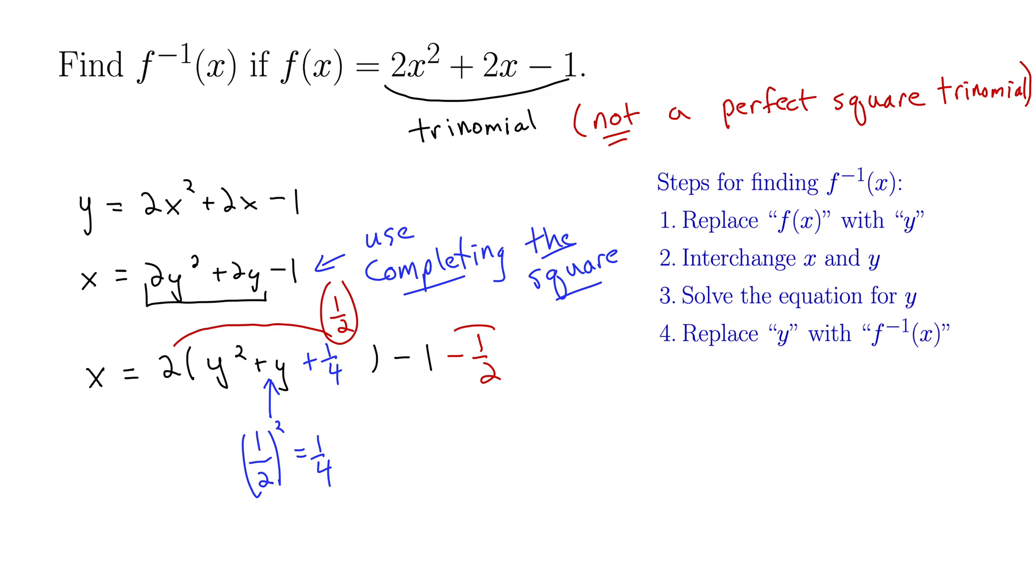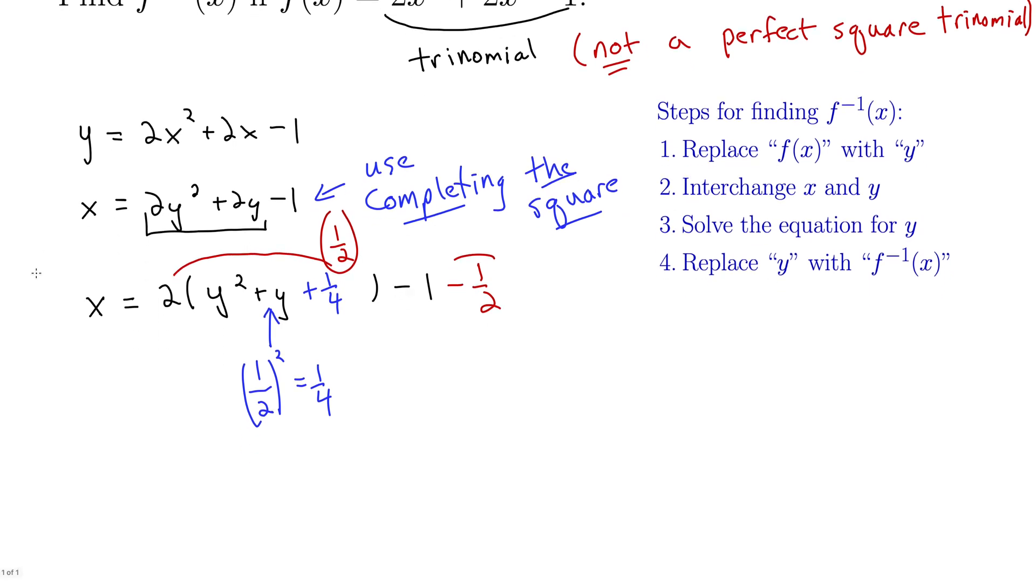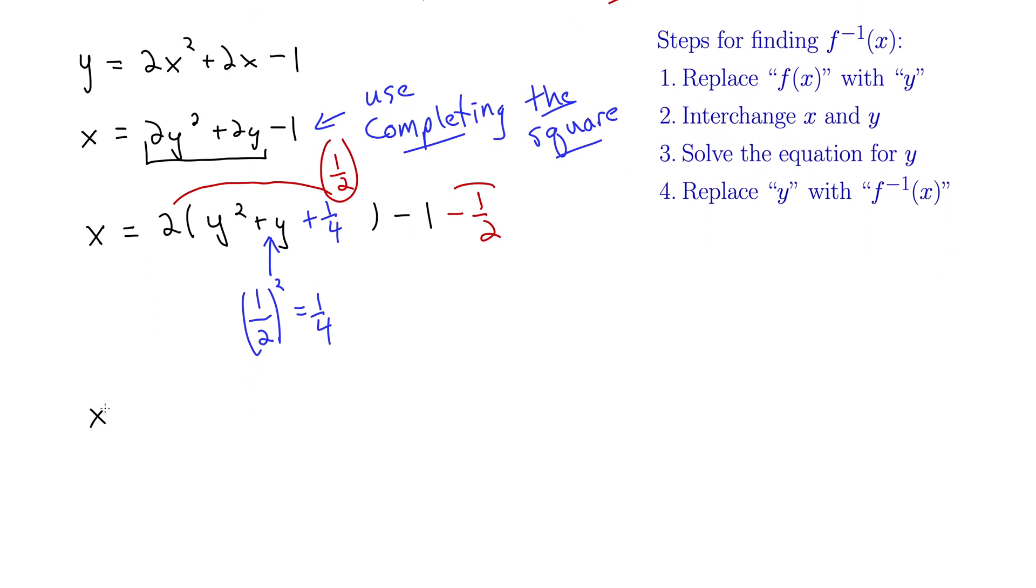Alright, let's clean this up. So we have x equals 2y squared plus y plus 1 fourth minus 3 halves, and now this trinomial here is our perfect square, which we can rewrite as 2 times the quantity y plus 1 half squared minus 3 halves.